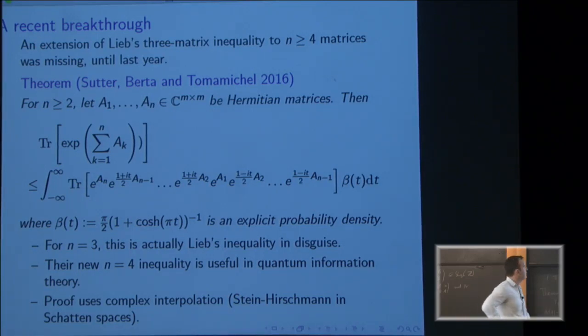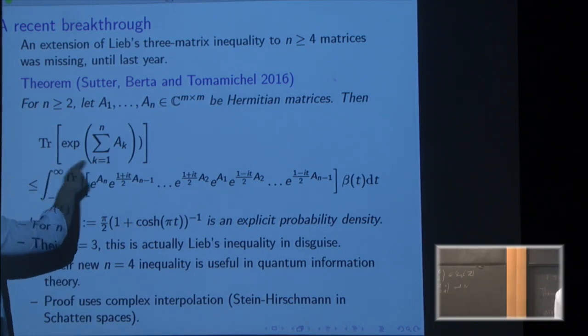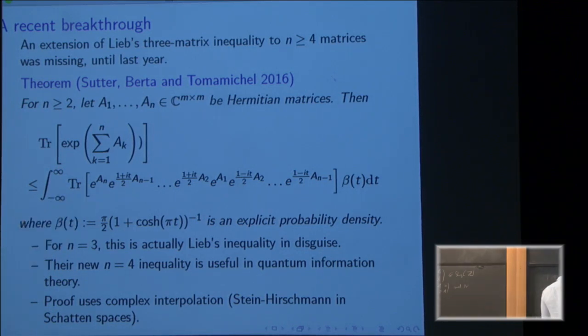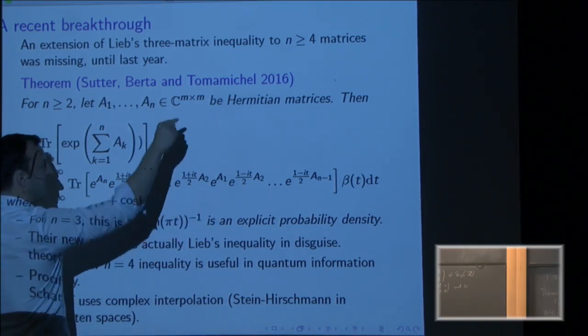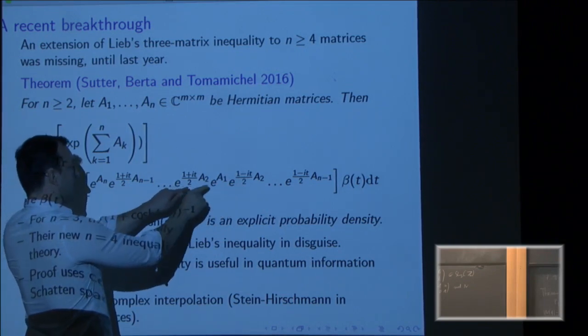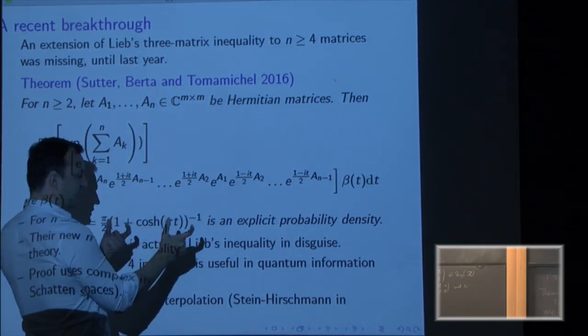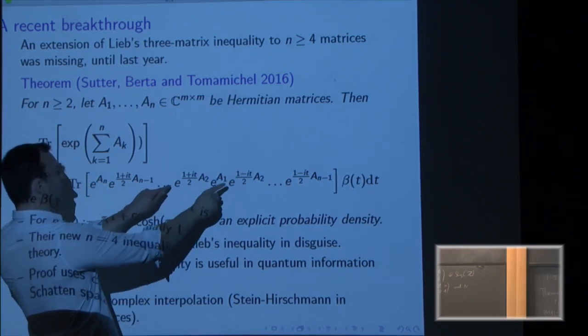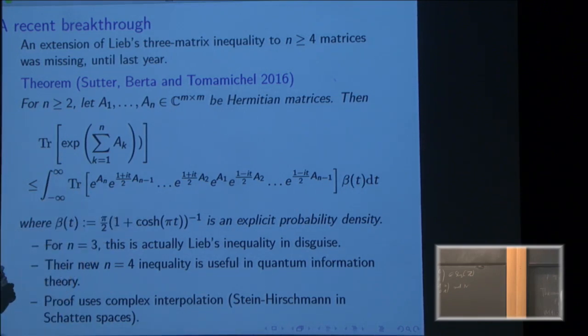And it's on the next slide. It's a little bit bigger because you have n matrices, but it's actually quite nice. So these guys, three guys, Sotter-Bertha-Tomamichel, they come from quantum information theory and they needed an extension to four matrices. And here's what they proved. Let's go through this. So n is bigger than two and n is the number of matrices. So previously it was two and three. Take n Hermitian matrices. That's the usual left-hand side. I just take the exponential of their sum. And now here's what they get. So what happens is, you remember, there was always this one half on either side in this counter example, right, e to the b over two, e to the b over two. And what happens is they come to the side with the e to the one half. But then there's also a complex phase, e to the one plus i t over two, to the one minus i t over two. And because I'm conjugating by unitaries, I still get something positive. I do this for all the ones in between, a two up to a n minus one. And then I close with e to the a n.